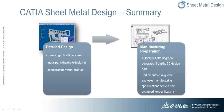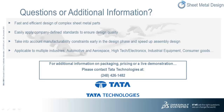So what have we seen? In the detailed design phase we've seen how you can create right first-time sheet metal parts thanks to design in context of the virtual product. And in the manufacturing preparation phase we've seen automatic flattening views created directly from the 3D design part. In addition, the part manufacturing view encloses manufacturer specifications derived from the engineering specifications. In conclusion, we've seen how CATIA sheet metal design allows the fast and efficient design of complex sheet metal parts, how easy it is to apply company-defined standards to ensure design quality, and how we can take into account manufacturability constraints early in the design phase and speed up assembly design.